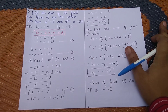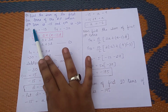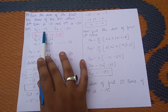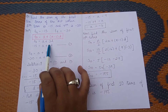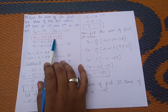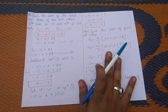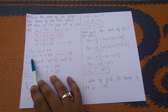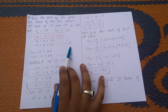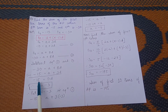Question 4: Find the sum of the first 10 terms of an AP whose 4th term is -15 and 9th term is -30. Using tn = a + (n-1)d: t4 gives -15 = a + 3d (equation 1), and t9 gives -30 = a + 8d (equation 2).